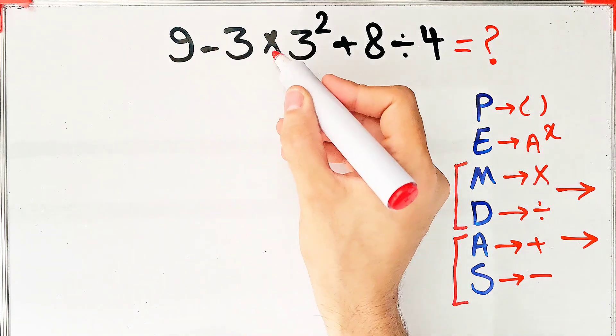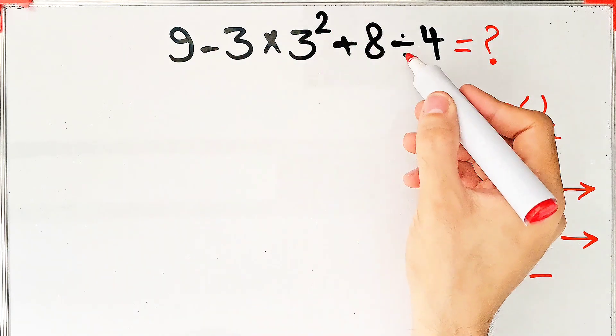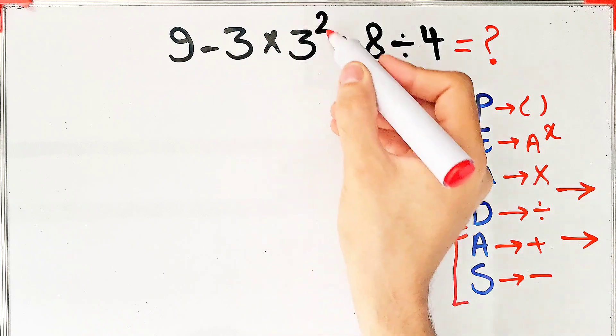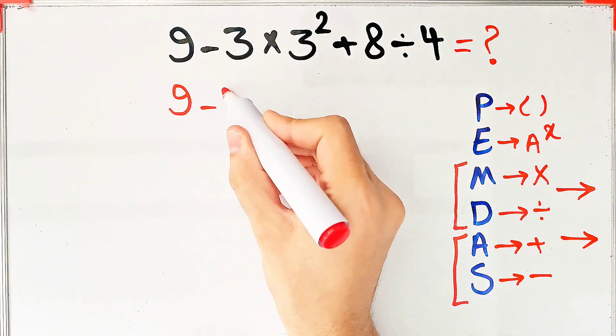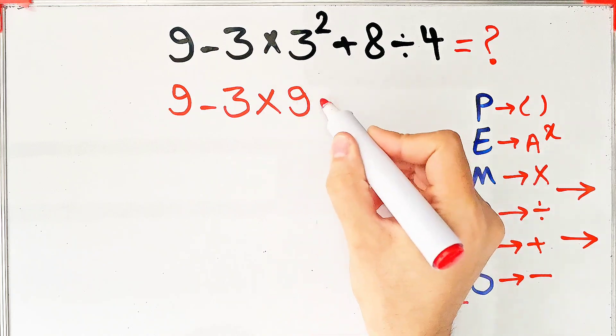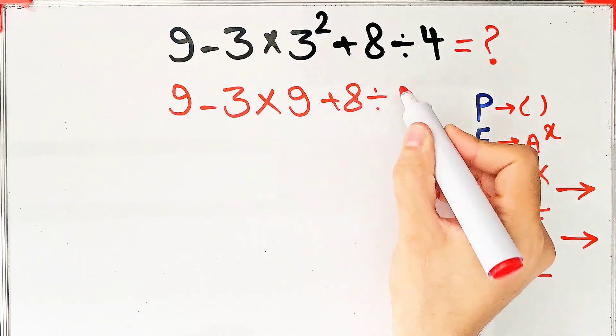We have subtraction, multiplication, exponent, addition, and division. First, we simplify this exponent. 9 minus 3, then times 3 to the power of 2, that equals 9, plus 8, then divided by 4.